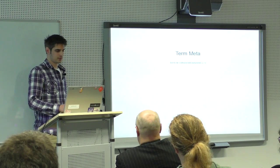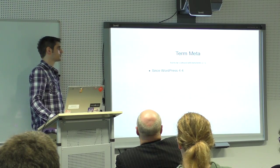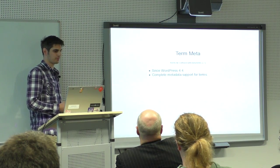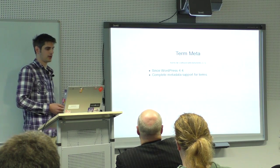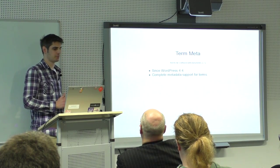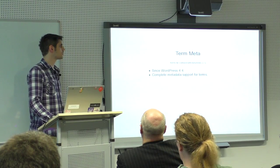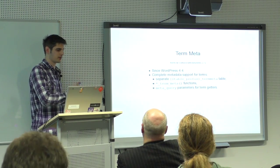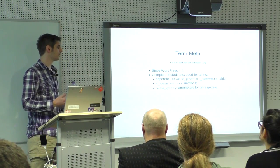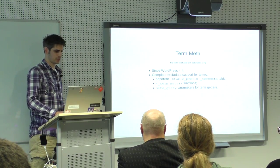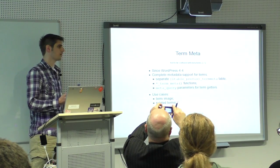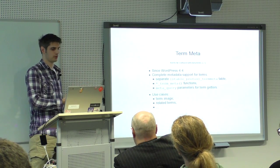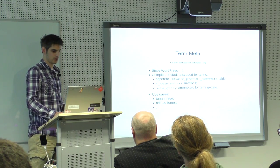The second thing — not to be confused with meta terms — is term meta, also coming with WordPress 4.4. It's been a long time coming, requiring several prerequisite changes over about six or seven major release cycles. It means complete metadata support for terms: there's a new table, and specific functions like add_term_meta, and a meta query for terms. Use cases include attaching an image to a term for display on a category archive page, or relating terms to each other or other creative things.